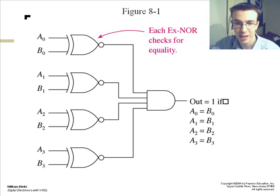Each exclusive NOR checks for equality. So it outputs 1 if A0 equals B0, A1 equals B1, A2 equals B2, A3 equals B3.